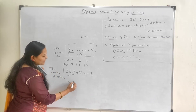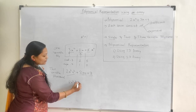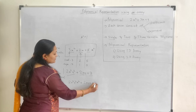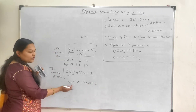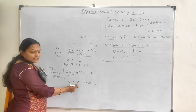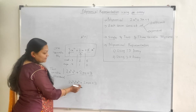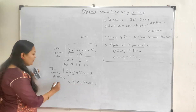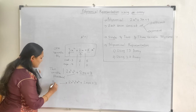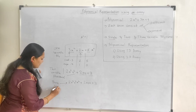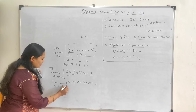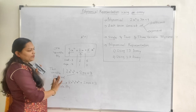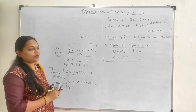For example: 2x raised to 2, y raised to 2, z raised to 2 plus 2xyz plus 3. In this polynomial, three variables are there — x, y and z — that's why this is called a three variable polynomial. So this is the example of a three variable polynomial. This is called one variable, two variable, and three variable polynomial.